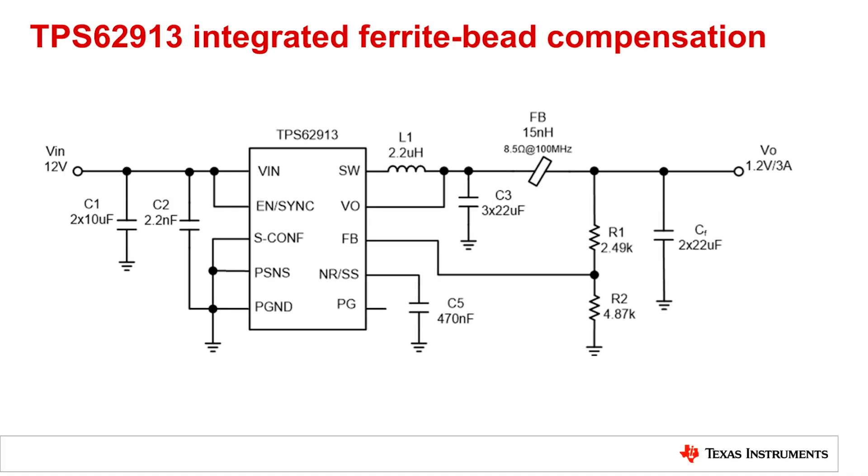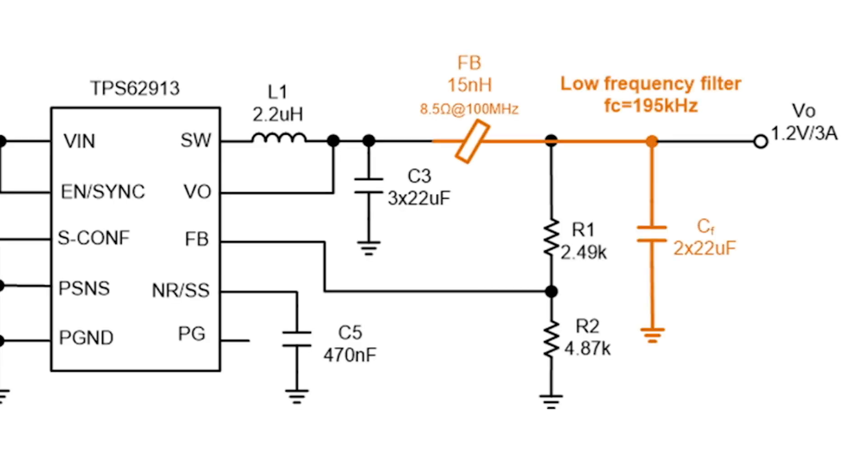Now here we have the buck converter. The device uses a ferrite bead to form an additional LC filter with the output capacitor. This reduces the output voltage ripple by typically 30 dB.